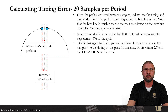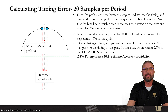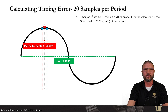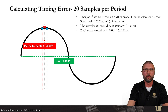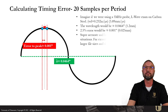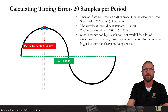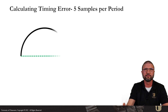Since we're dividing the period by 20, the interval between samples represents about 5% of the cycle. Divide that again by two and we're within 2.5% of the location of the peak — 2.5% error, 97.5% timing fidelity. For a 5 megahertz L-wave exam on carbon steel, that 2.5% error equates to about one thousandth of an inch — super accurate, really high resolution, but it might be overkill for some situations and far exceeds most code requirements. More samples also means larger file sizes and slower scanning speeds.